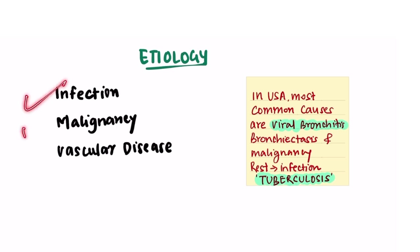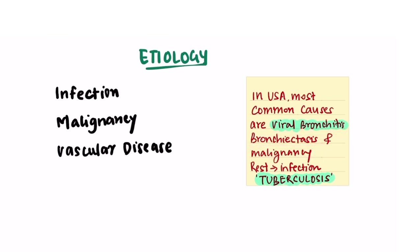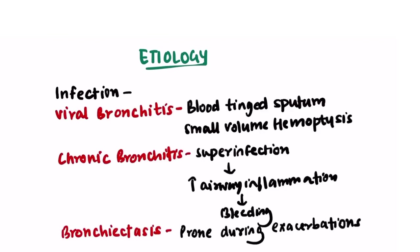Hemoptysis has three major causes: infection, malignancy, and vascular diseases. In the USA, the most common causes are viral bronchitis and malignancy, while in the rest of the world the most common cause is infection, specifically tuberculosis. Now let us learn about some important characteristics of infections.